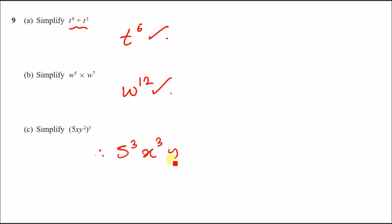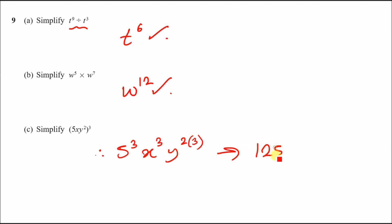So 5 gets the power of 3, x gets the power of 3, and since y already has a power of 2 you multiply: 2 times 3 gives y⁶. Therefore the result is 5³ × x³ × y⁶, which simplifies to 125x³y⁶.